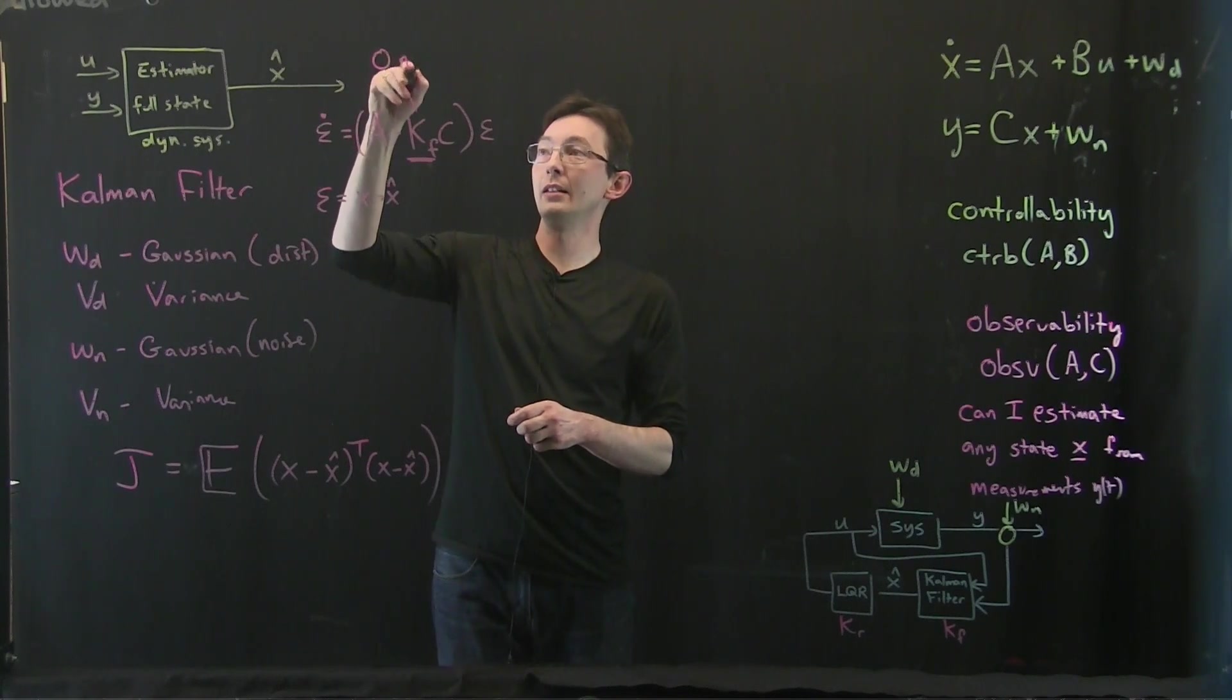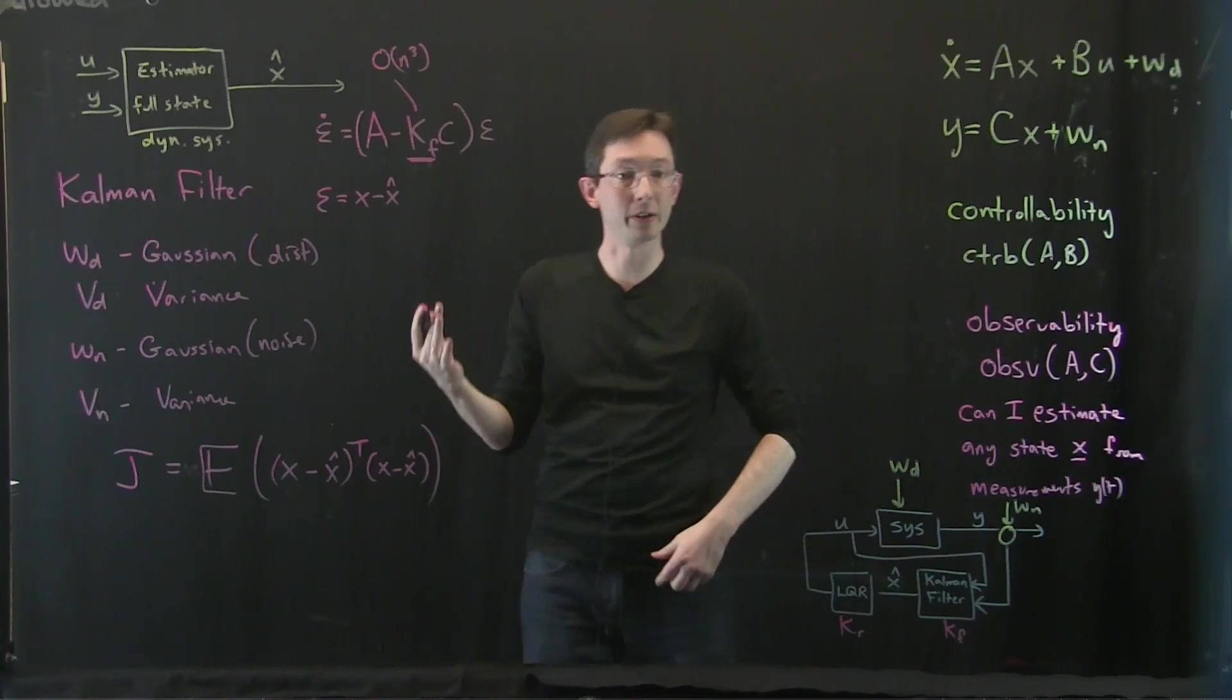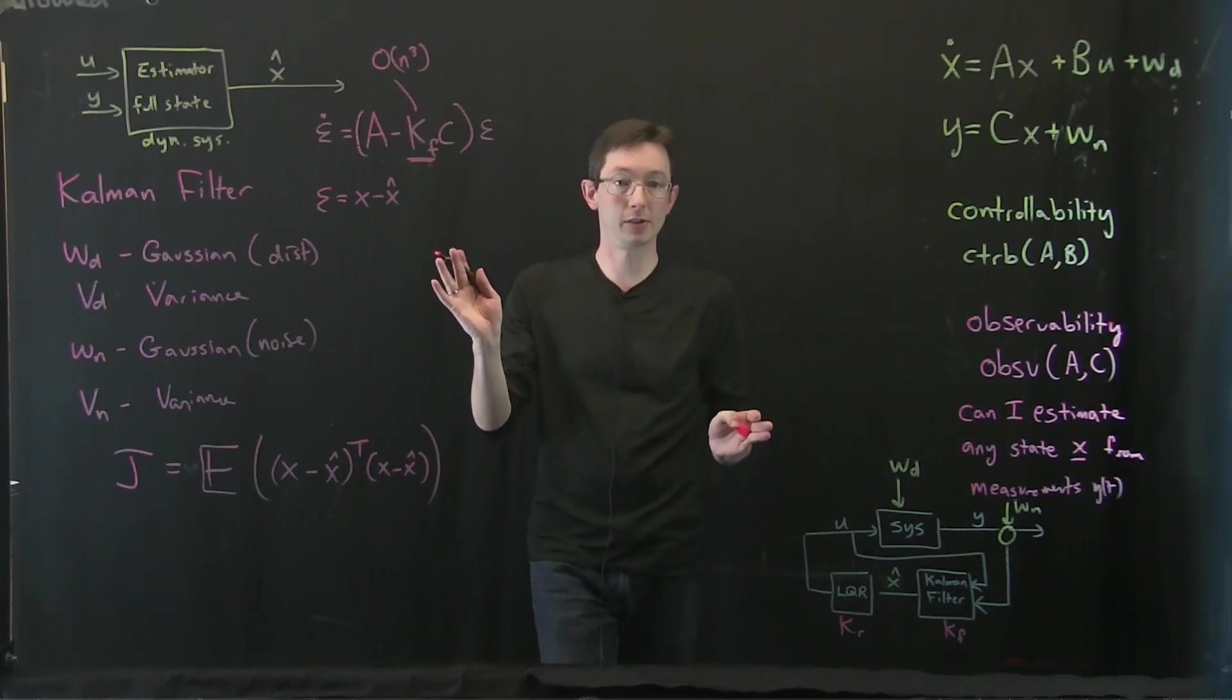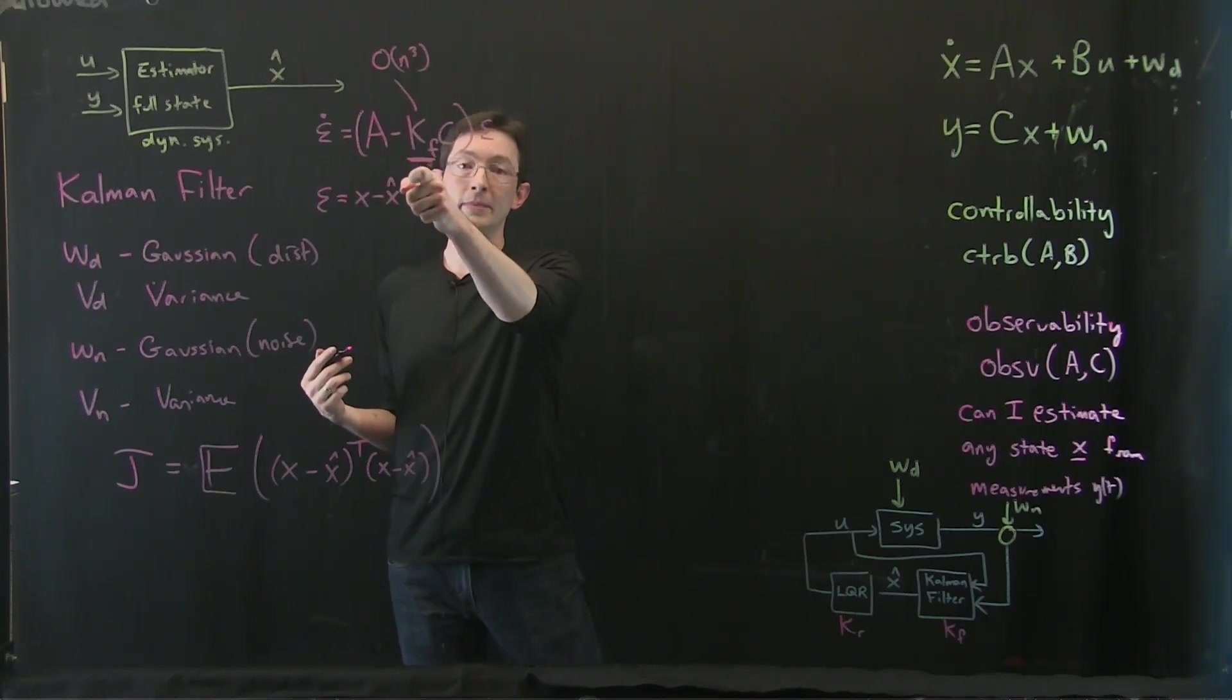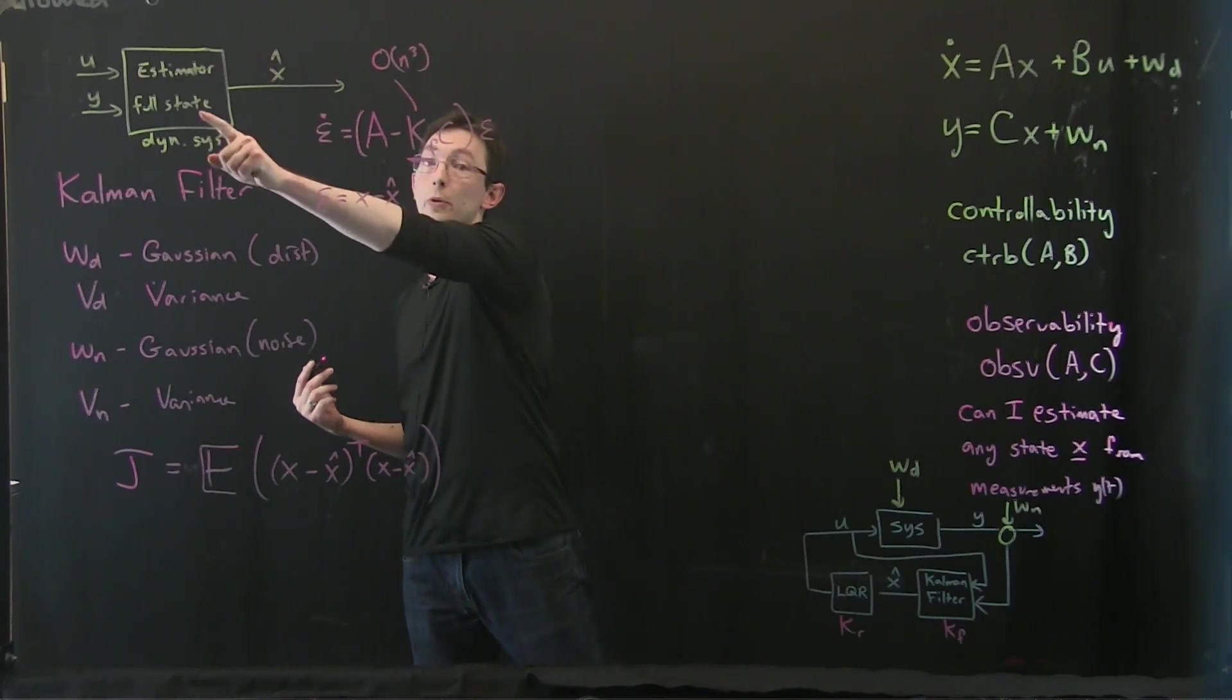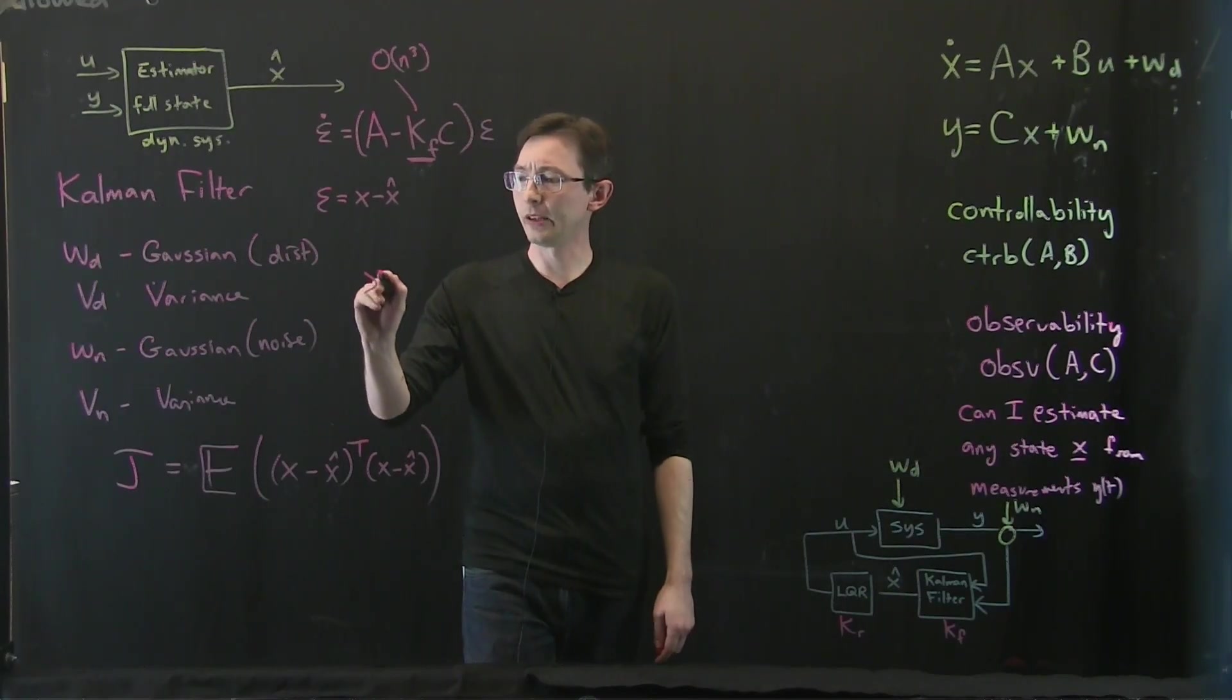Again, it's order n cubed in the state dimension of X. But for moderately sized systems, it's tractable and we can do that. And then you can get these optimal Kalman filter gains for your full state estimator. So in MATLAB, it's pretty simple.